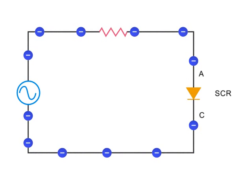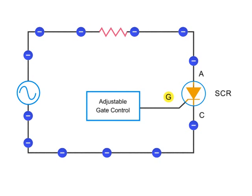This is accomplished by manipulation of the adjustable gate control. This gate control function determines when and how much the SCR conducts.